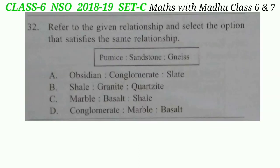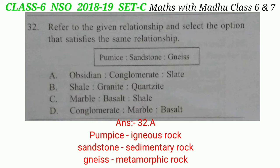Question 32: Refer to the given relationship and select the option that satisfies the same relationship. Pumice is an igneous rock, sandstone is a sedimentary rock, and gneiss is a metamorphic rock. Looking at option A: obsidian is an igneous rock, conglomerate is a sedimentary rock, and slate is a metamorphic rock. So the correct answer is option A — obsidian, conglomerate, and slate.